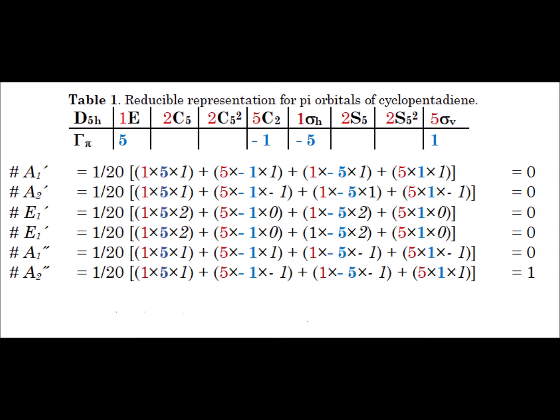When we apply the formula for the irreducible representation A2 double prime, which has characters 1, -1, -1, and +1 in the character table for D5H, we get a result of 1. This tells us that we have one copy of the A2 double prime irreducible representation inside the reducible representation for pi bonding in cyclopentadienyl anion.